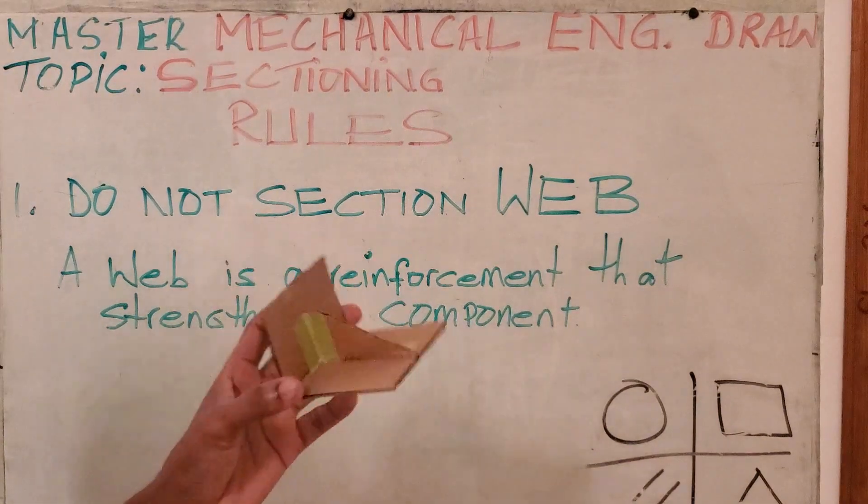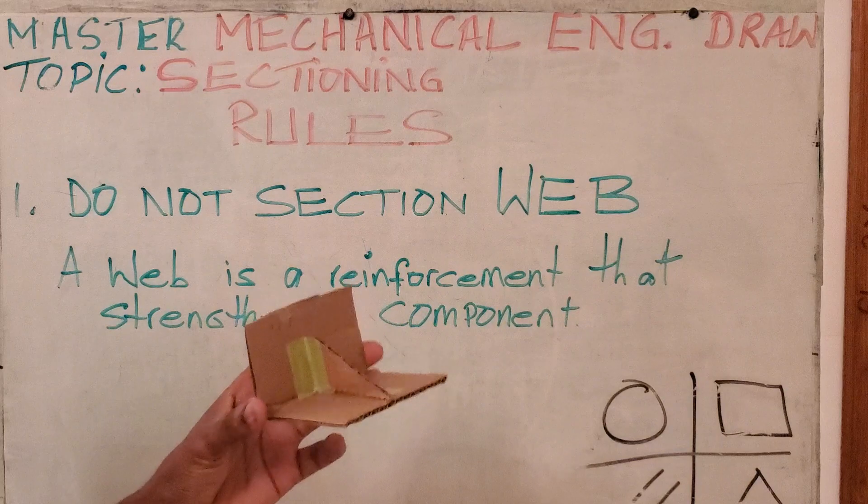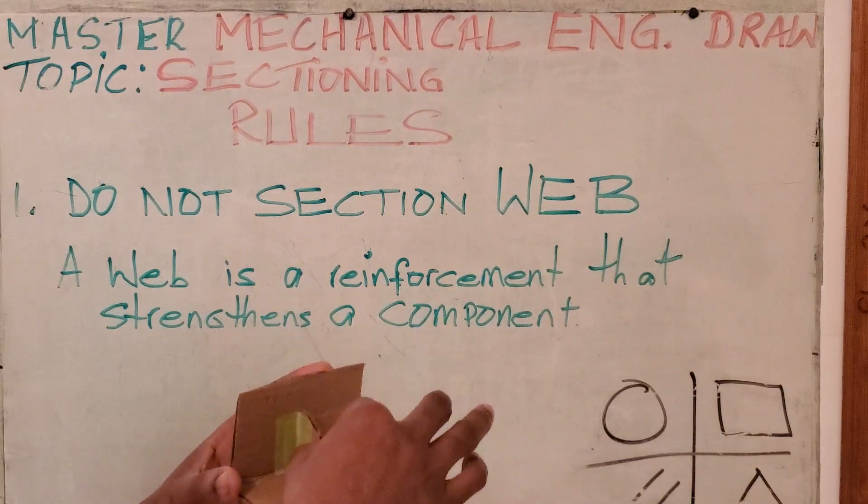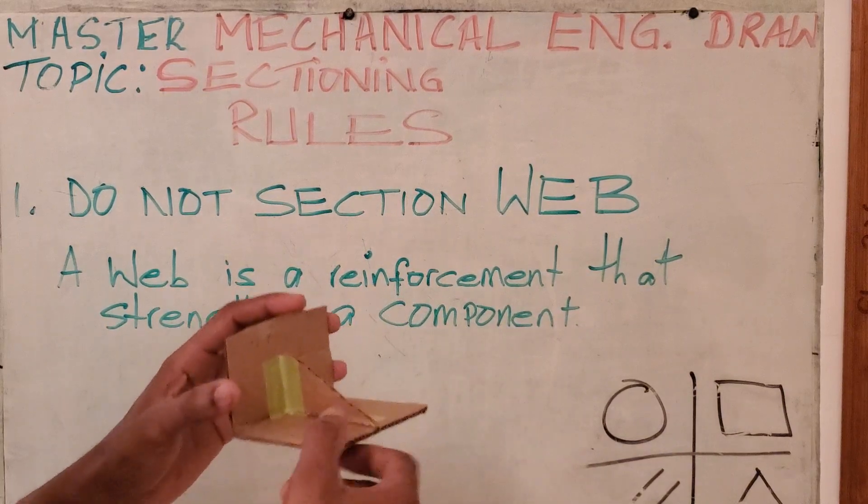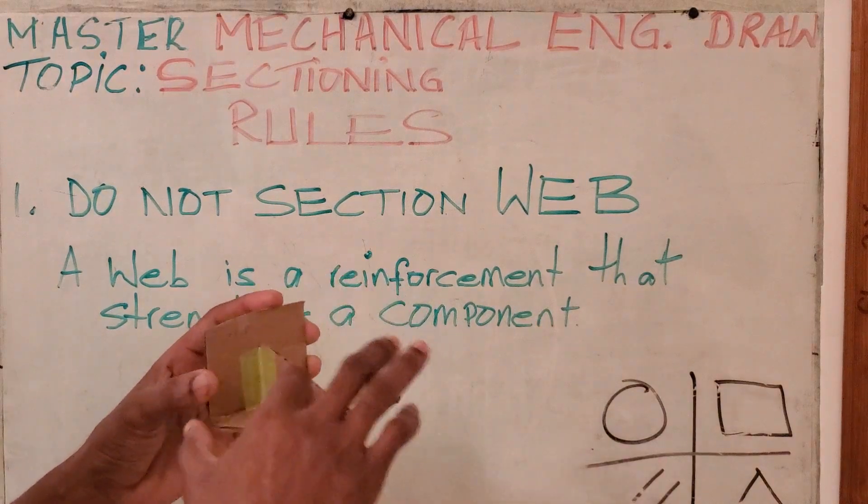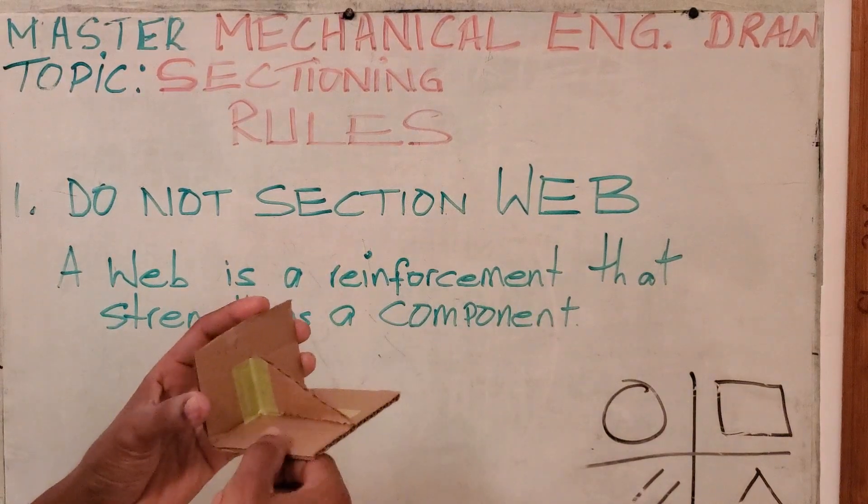Say for example, this material. This piece here is a web. And what this web does, this web strengthens and or supports these pieces right here.